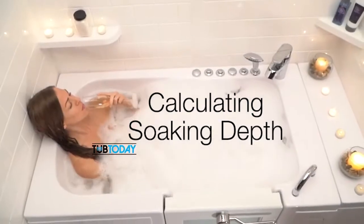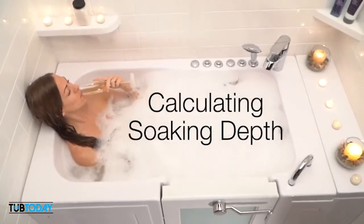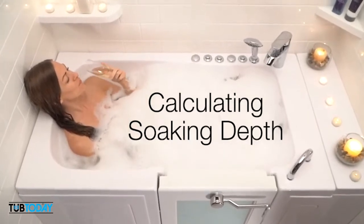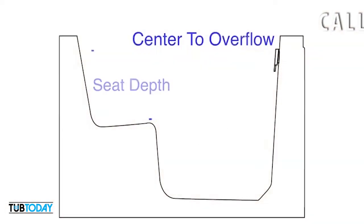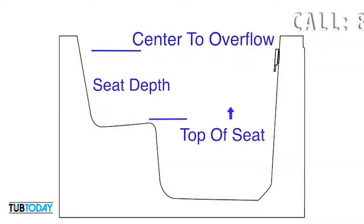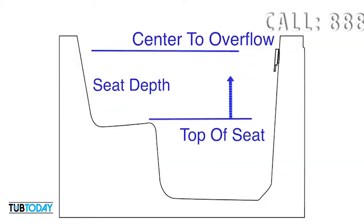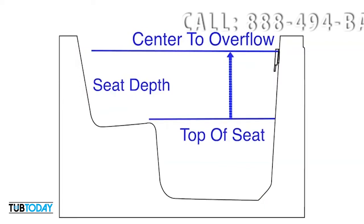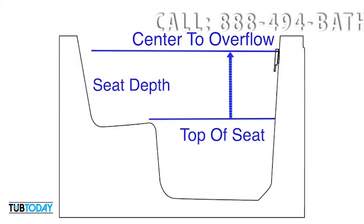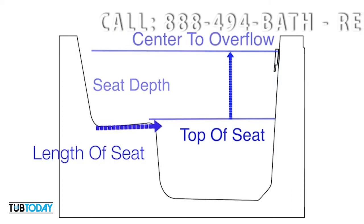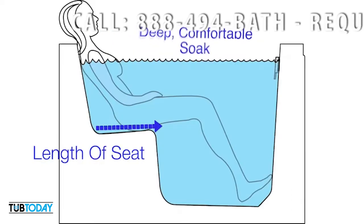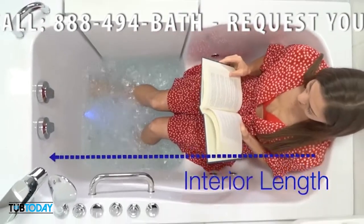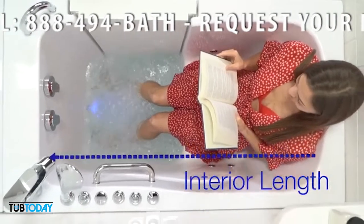Ella walk-in tubs come in a wide variety of shapes and sizes. In order to determine the soaking depth of a particular tub, three factors are determined: a measurement is made from the top of the seat to the center of the overflow vents, the length of the seat is measured, and then the interior length of the tub is calculated.